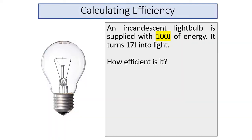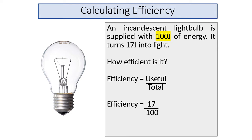In this question, an incandescent light bulb is supplied with 100 joules of energy and turns 17 joules into light. So 100 joules is the input energy and 17 joules is the useful energy. 17 divided by 100 equals 0.17 efficiency. To calculate efficiency as a percentage, multiply by 100, so the efficiency of this bulb is 17%.